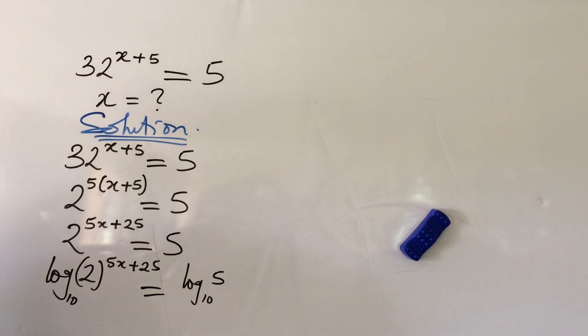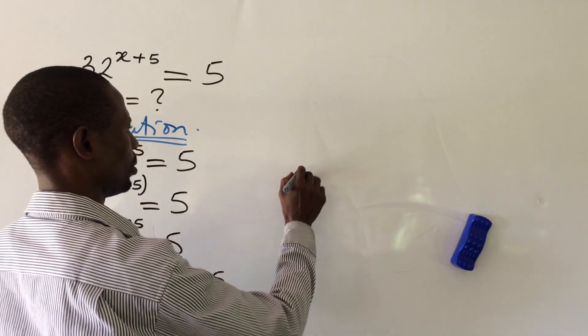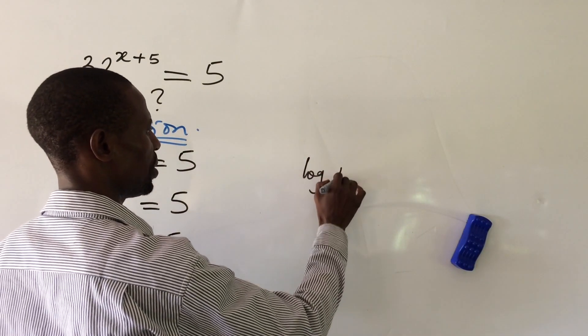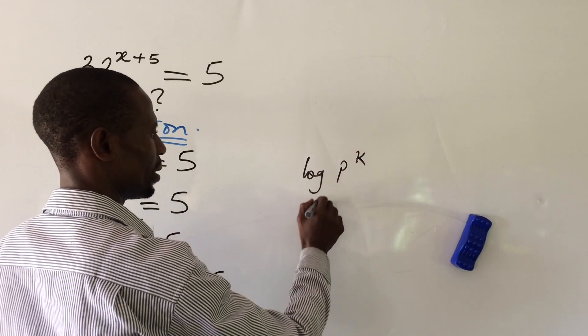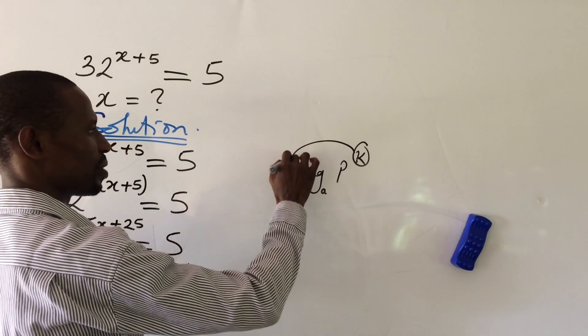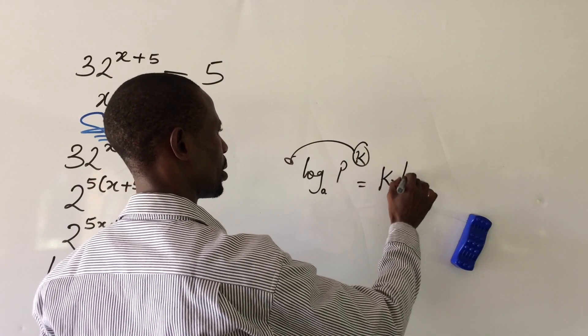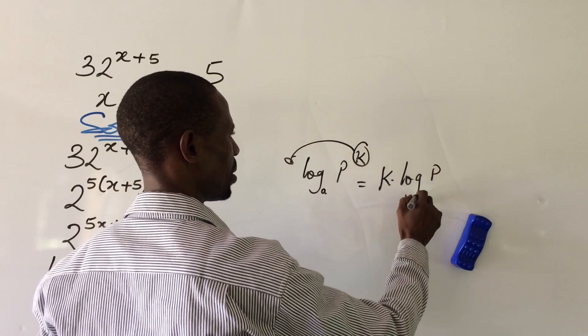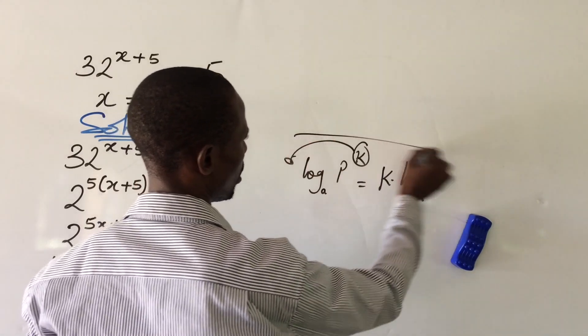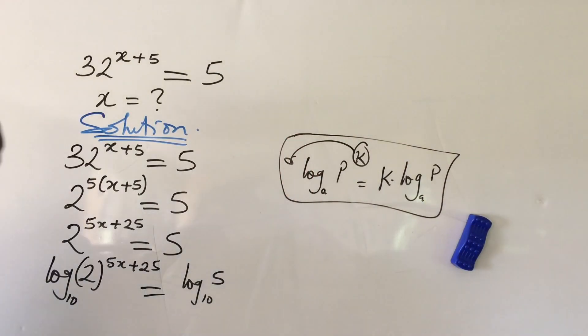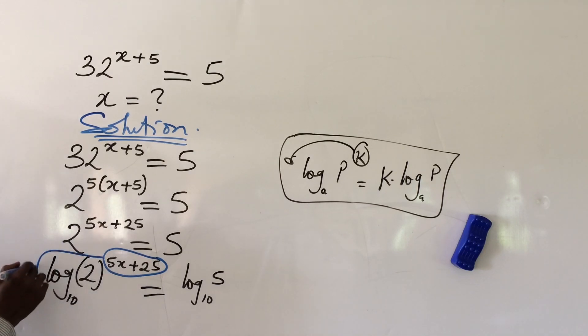Recall the law of logarithm which says that if you have your log your p to the power of k, let's say base a, move the whole of this exponent backward. And so this will end up giving us k dot log your p base a. So if we succumb to this rule, then we can rewrite this side of the equation.